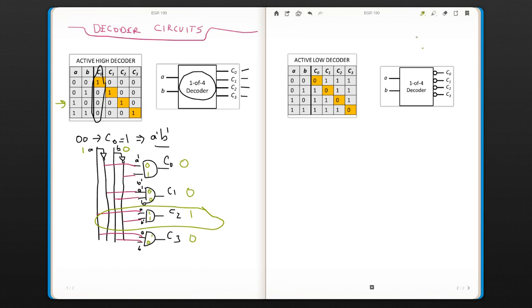So when it comes to active low decoder, the symbol is again exactly the same except it has these bubbles. That means when an output is selected, let's say we selected this one, that is going to be 0 and all the other outputs will be 1. That is the only difference that you can see in the truth table.